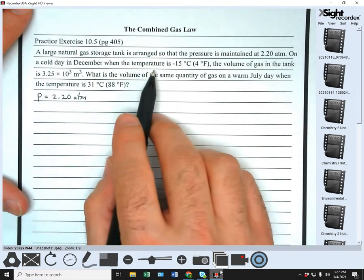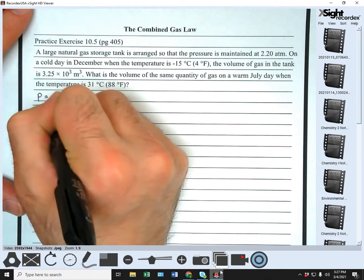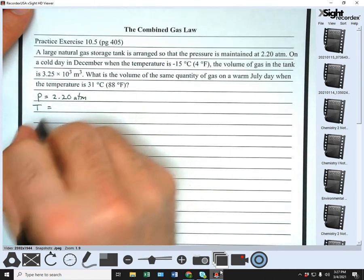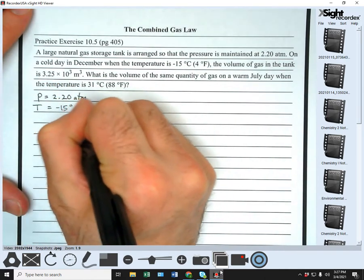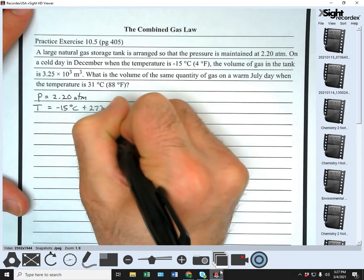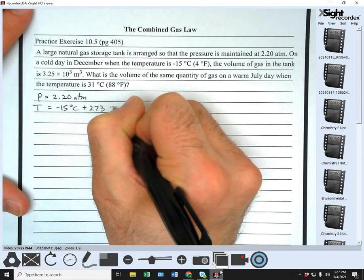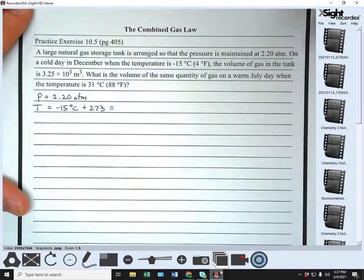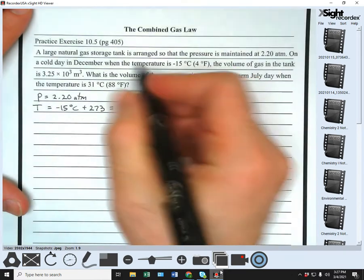On a cold day in December, the temperature, so we've got a temperature of negative 15 degrees Celsius, which is, let's see, that comes out to be 258K, right?